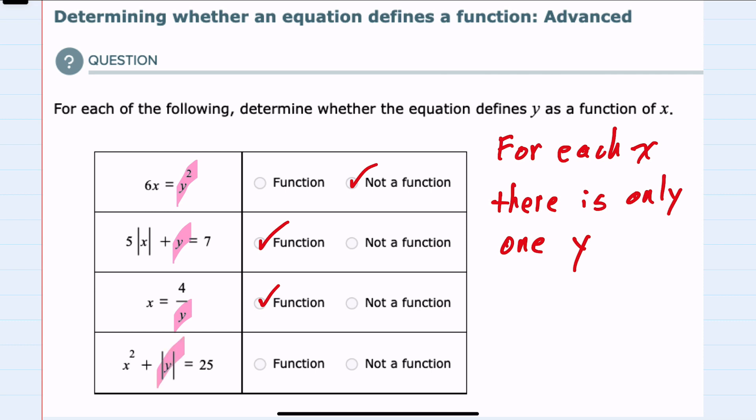However, in the last example, we have the absolute value of y. We know that the absolute value of 2 and the absolute value of negative 2 would be the same thing. So substituting in a 2 and substituting in a negative 2 would be the same end result. So this is also not a function.